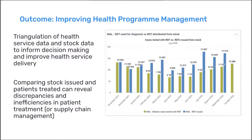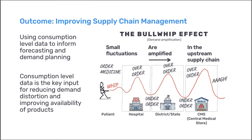Building on analytics and performance management, two specific outcomes are targeted. The first is improved health program management, by comparing health data and stock data, showing potential discrepancies in the number of patients treated and stocks used, and looking for ways to improve program management. The second is improved supply chain management, by using accurate consumption-level data to improve demand planning and forecasting, reducing demand amplification and distortion that otherwise occurs when using previous orders or upstream data as a surrogate for consumption, thereby reducing stockouts and keeping medicines available for patients.